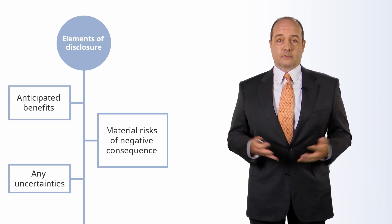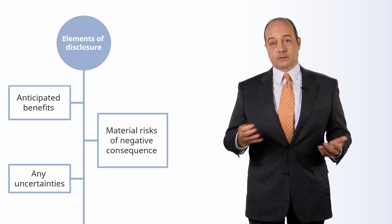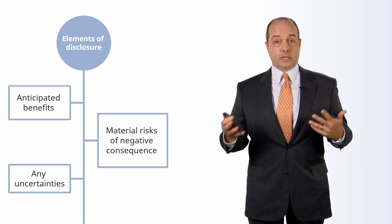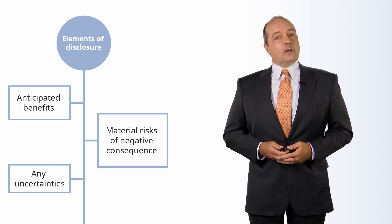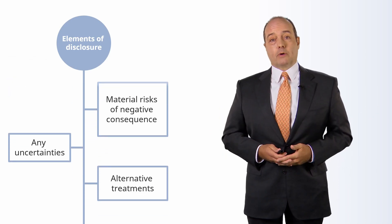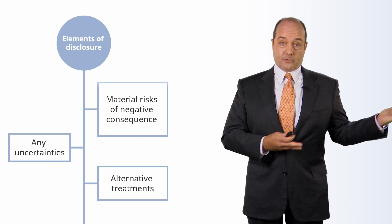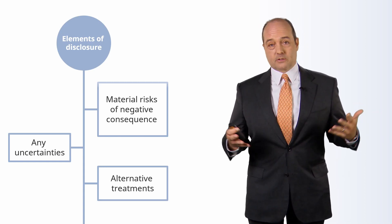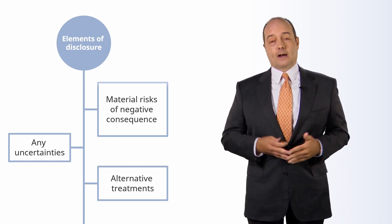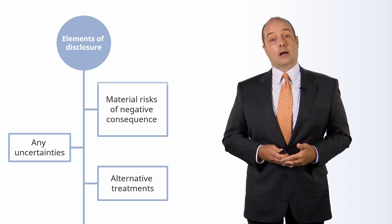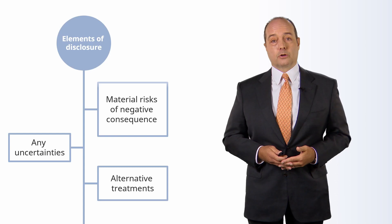There may be things that are uncertain — that's also part of the reality of clinical medicine. Things can happen, and the patient needs to be aware that we can't predict everything. We also have to say: are there alternatives to what we are recommending? There may be an option to not do any treatment and just follow the natural history of the disease. There may be other treatments that might not be as highly recommended, but the patient might wish to hear about those and the benefits and risks of those alternatives.